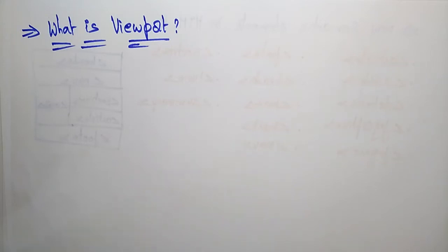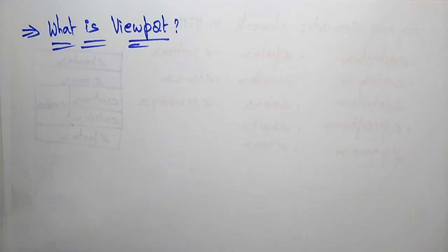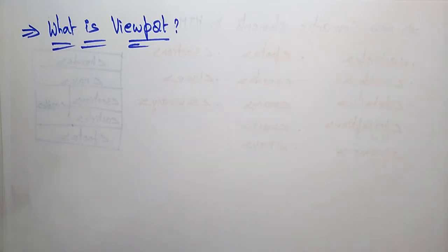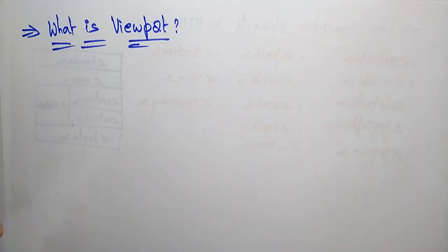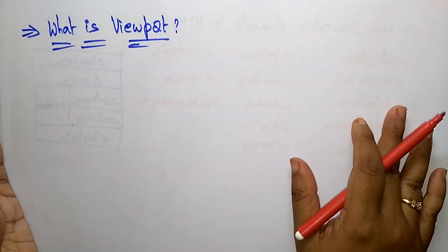Let's see the next topic, which is viewport. What exactly is the viewport and where do we use it? A viewport is used in responsive web design. Responsive web design means that whatever page you open, irrespective of the device, that page will fit to your screen — whether you are opening it on mobile phones, tablets, computer screens, or large systems. With the help of the viewport element, we can display the page fit according to your display screen.